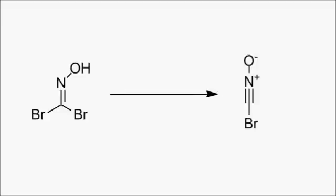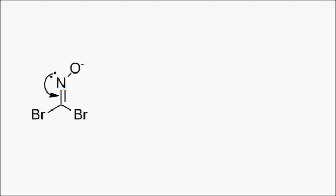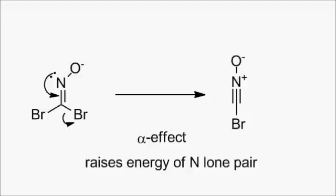When the reaction was carried out, potassium bicarbonate was used to generate the nitrile oxide. The bicarbonate anion will deprotonate the oxime and generate an oxyanion, and whilst these electrons don't do anything directly, they enhance the activity of the nitrogen lone pair, which now pushes away a bromide and generates the nitrile oxide. This is known as the alpha effect — the increased charge density on the oxygen raises the energy of the nitrogen lone pair and enhances its activity.